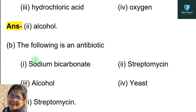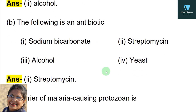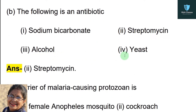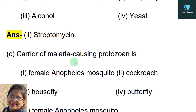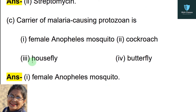Next question: the following is an antibiotic — first option sodium bicarbonate, second option streptomycin, third option alcohol, fourth option yeast. Correct option is streptomycin.